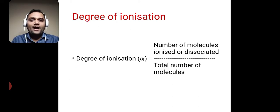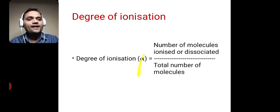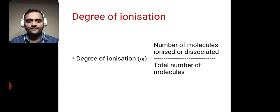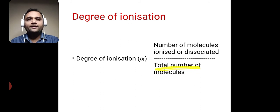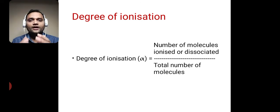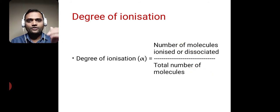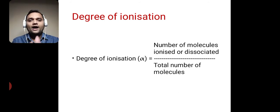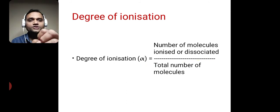The next concept is degree of ionization. The degree of ionization, shown by the letter alpha (α), is equal to the number of molecules ionized or dissociated divided by the total number of molecules. For example, if I have 100 total molecules and 50 undergo ionization, then α = 50/100 = 0.5, which is my degree of ionization.